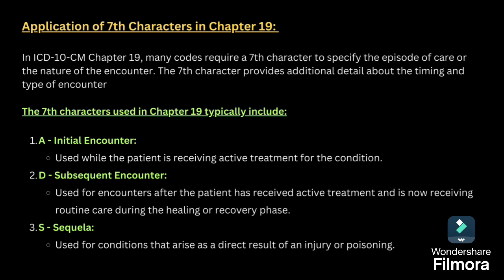Application of the seventh character in chapter 19 — always make sure S series to T series codes have a seventh character. The seventh character includes A, D and S. A means initial encounter, D is subsequent encounter, and S is sequela. For initial encounter when the patient is coming for active treatment, give A; for follow-up visit, D; and for late effect, S.